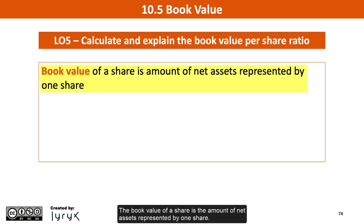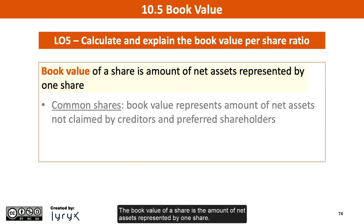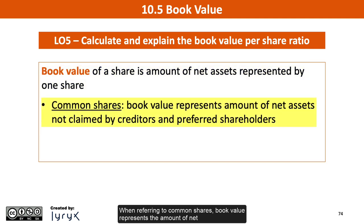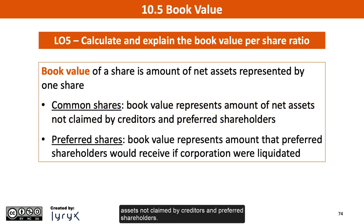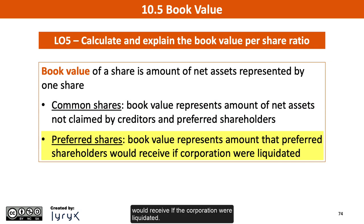The book value of a share is the amount of net assets represented by one share. When referring to common shares, book value represents the amount of net assets not claimed by creditors and preferred shareholders. When referring to preferred shares, book value represents the amount that preferred shareholders would receive if the corporation were liquidated.